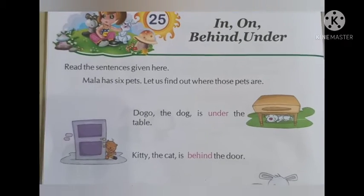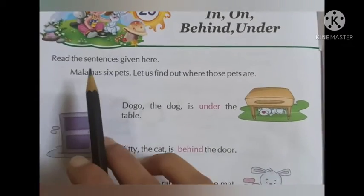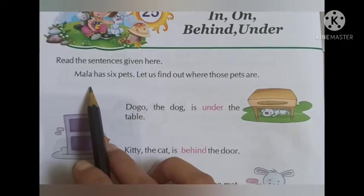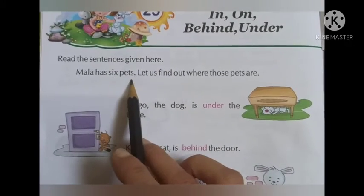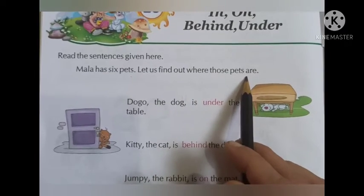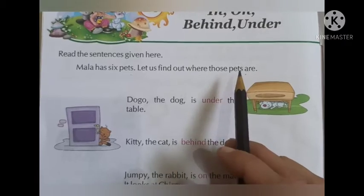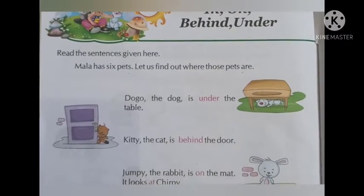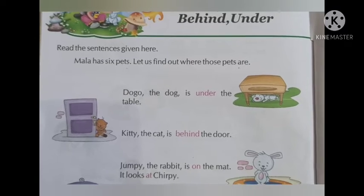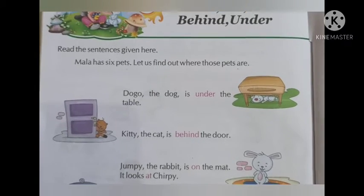Students, this is page number 66 of your grammar book. Here you can see: read the sentences given here. Mala has six pets — let us find out where those pets are. So Mala is a girl who has six pets, and in these sentences we can find out who these pets are and where they are.